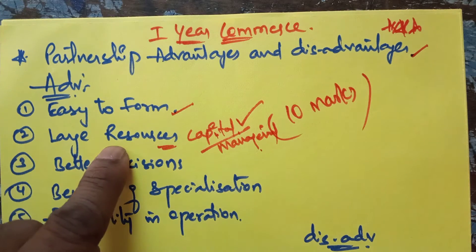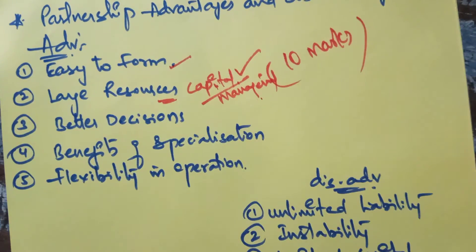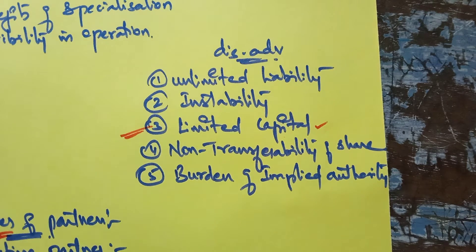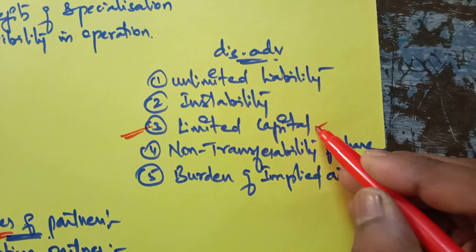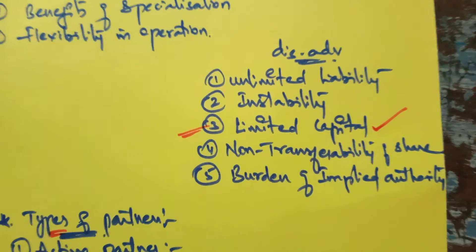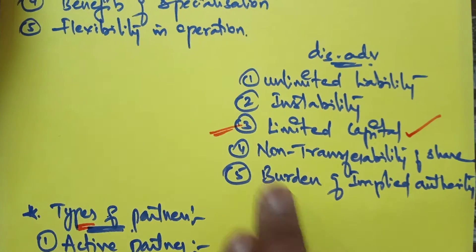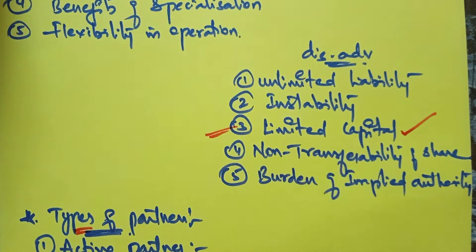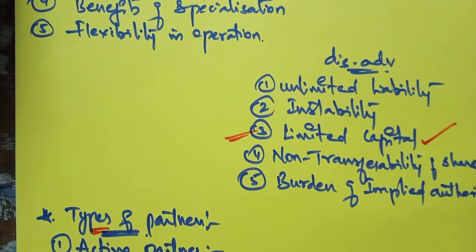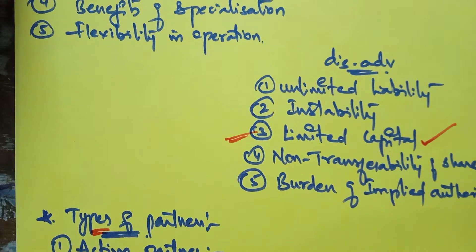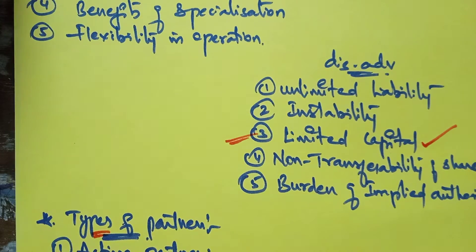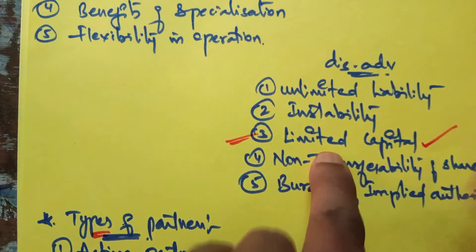However, when compared to a company form of organization, capital in partnership is limited — only 10 or 20 members arrange capital. In a company, capital is raised from the general public across the whole nation, so thousands of crores can be gathered. So capital is an advantage compared to sole trading, but a disadvantage compared to company form of organization.